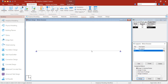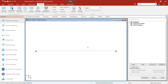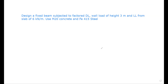Now we will go to loading and check the loads again. We have factored dead load — STAAD Pro will automatically calculate self-weight based on E and I values. For wall load: density 20 kN/m³ × width 0.2 m × height 3 m = 12 kN/m. This is the wall load expressed as a uniformly distributed load.